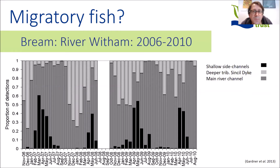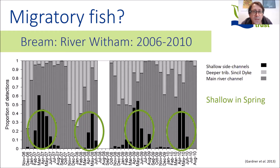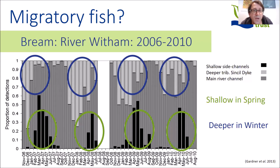Looking at habitat use — the River Witham is a big fen drain, very uniform and homogeneous habitat, but there were three distinct habitat types: the main river channel, shallow tributaries, and one deeper tributary. During spring, fish spent a lot of time in the shallow tributaries because that water is warmer. Fish are cold-blooded and their metabolism is dependent on water temperature, so they seek out the parts of the river that warm up quickest in spring. They also use these shallow side channels for spawning. In winter, when aggregated at the upstream end, they were utilising the Sinsal Dyke, a much deeper tributary — basically getting out of the main river flow and seeking shelter there.